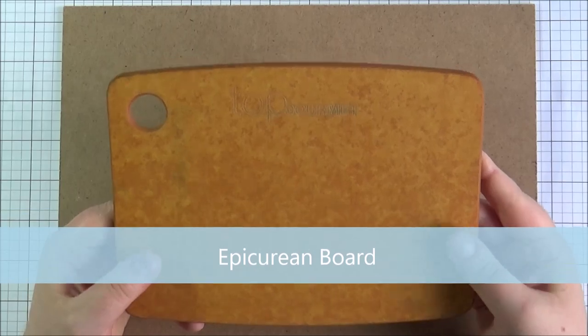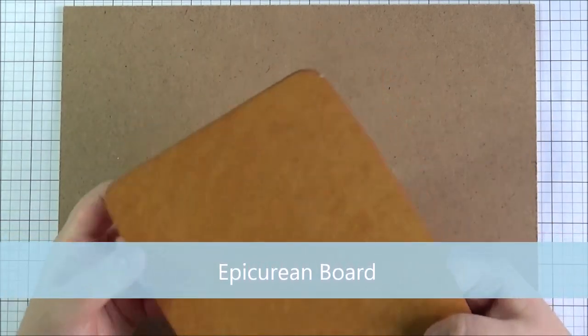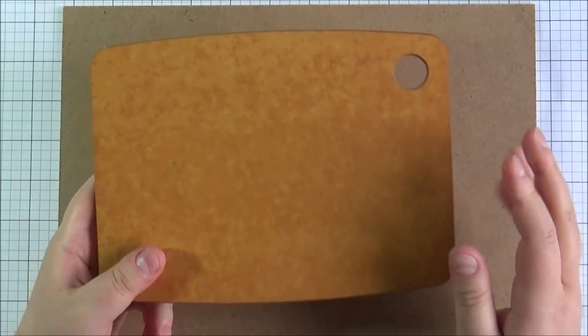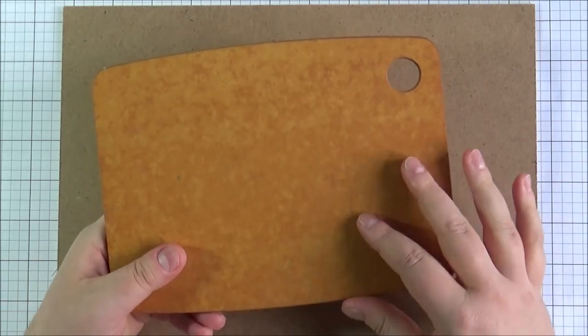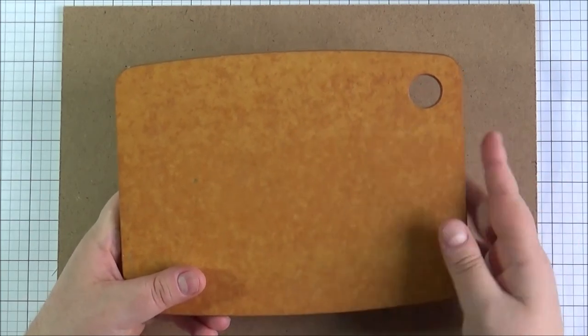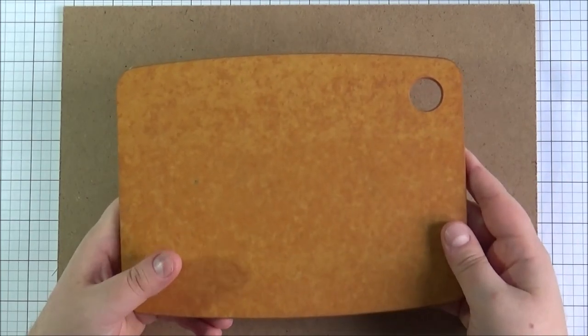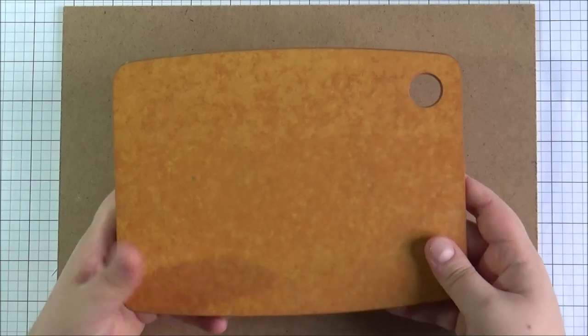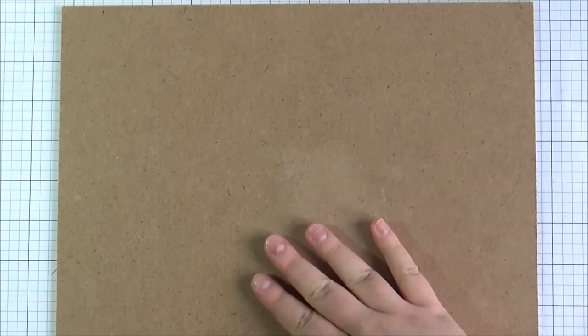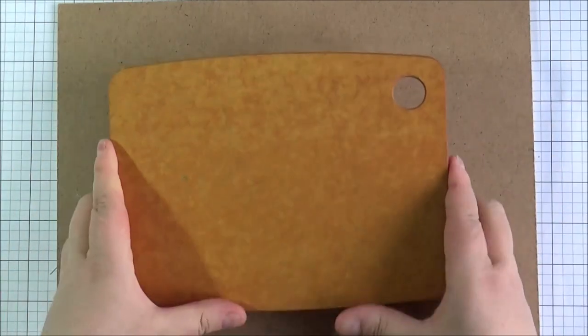Next up is the epicurean board now this is in comparison really quite expensive actually it's made to be a chopping board for cookery and it withstands the heat so if you're really into cooking this is a really great chopping board actually but I use it for watercolouring and the only thing with it is because it's so expensive I actually don't want to get it dirty so I tend to use the hardboard one if I'm going to make a lot of mess and I use the epicurean one if I don't.